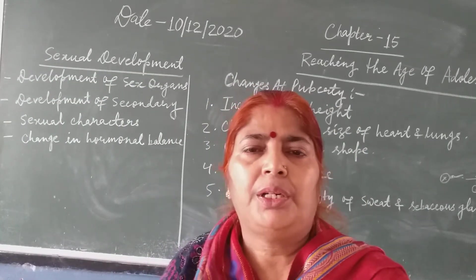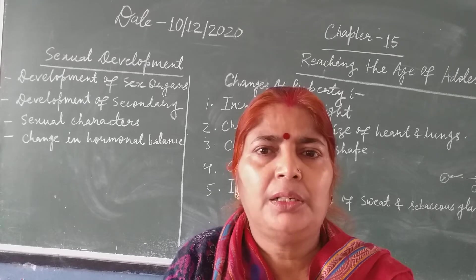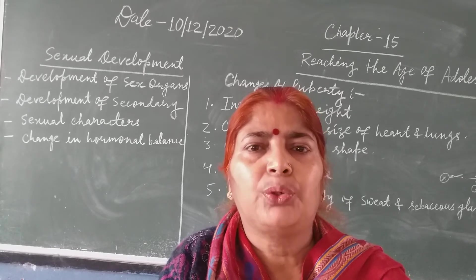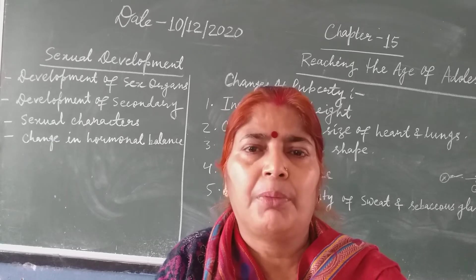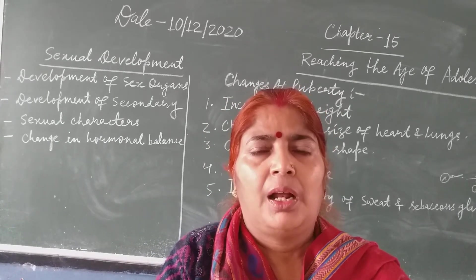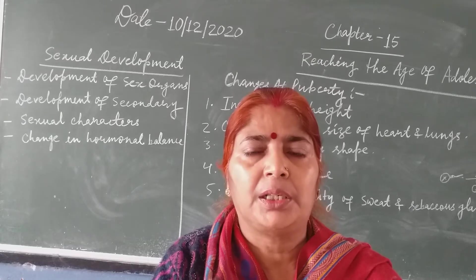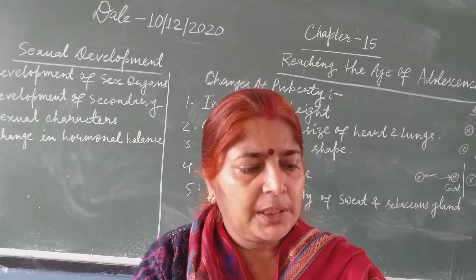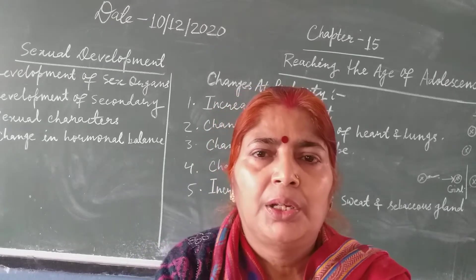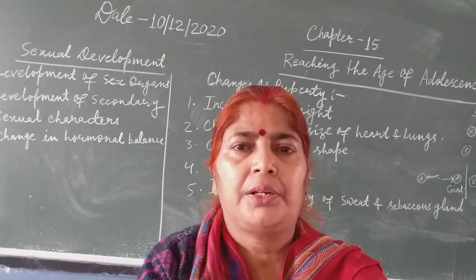Good afternoon children. Today we are going to continue the chapter on reaching the age of adolescence. Yesterday you had read the meaning of adolescence — it is derived from the Latin word 'adolescere' which means to grow into maturity. This adolescent age varies from 12 to 18 years. The early phase, around 15 years, is puberty, derived from the Latin word 'pubertage' meaning age of manhood. The age of puberty is influenced by heredity and by environmental factors like diet and exercise.